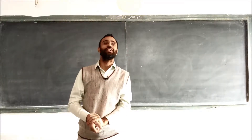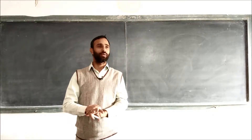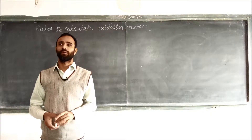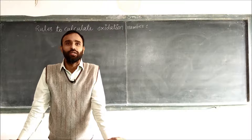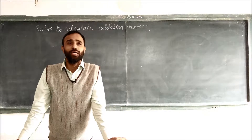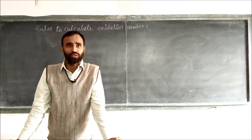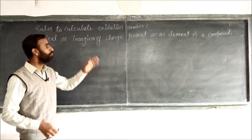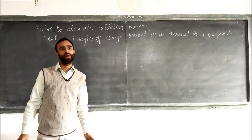Good morning. Today we will start with how to calculate oxidation number — rules to calculate oxidation number. First of all, what is oxidation number? Oxidation number is the real or imaginary charge on an atom in a compound when it goes from its elemental state to combined state.